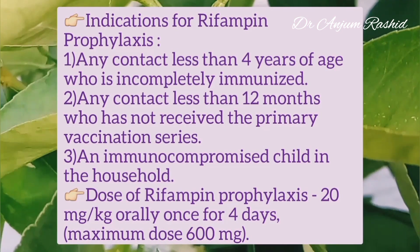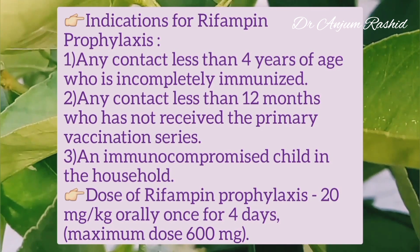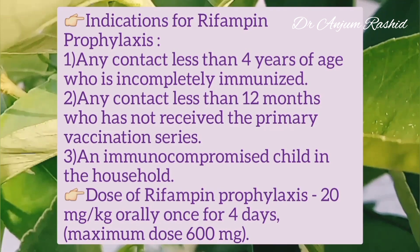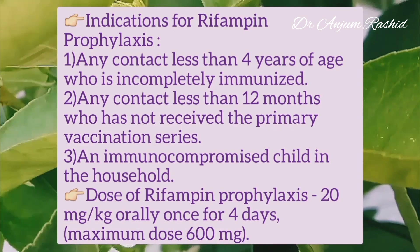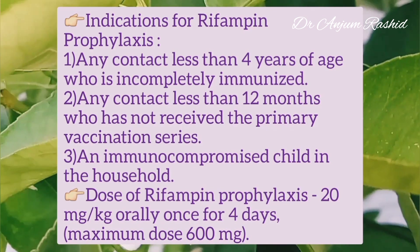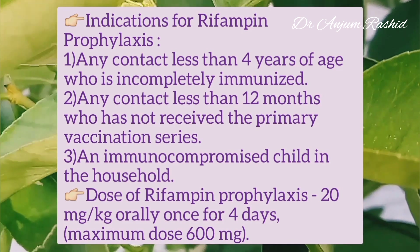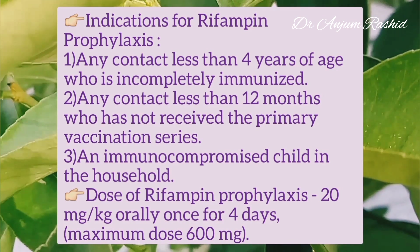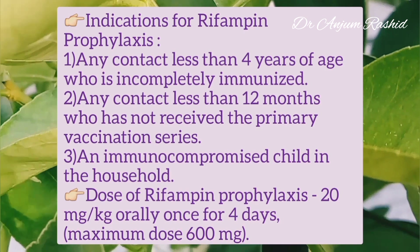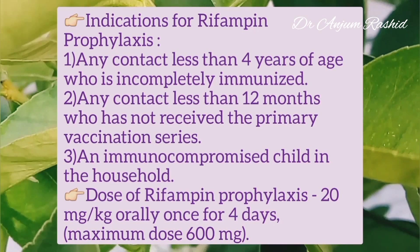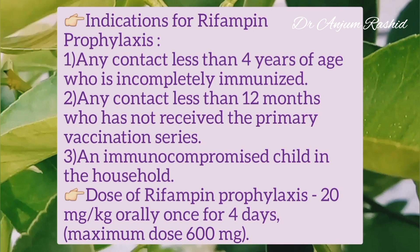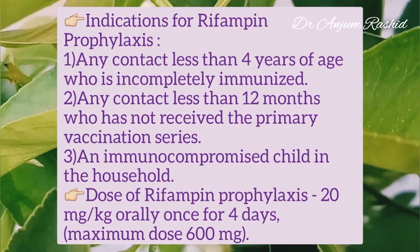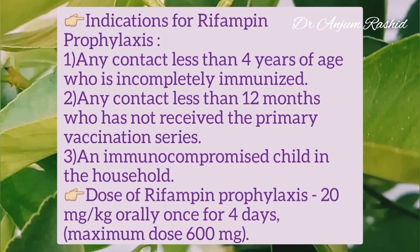Chemoprophylaxis is usually not required in acute epiglottitis, but there are 3 important indications for rifampicin prophylaxis: number 1, any contact less than 4 years of age who is incompletely immunized; number 2, any contact less than 12 months who has not received the primary vaccination series; and number 3, an immunocompromised child in the household.